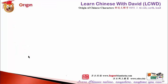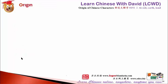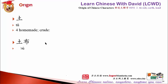土 also means local or native — belonging to the local land. 土产 means local products. 土布 — 布 means cloth — 土布 is hand-woven cloth, homemade and a little crude, not made in a factory.